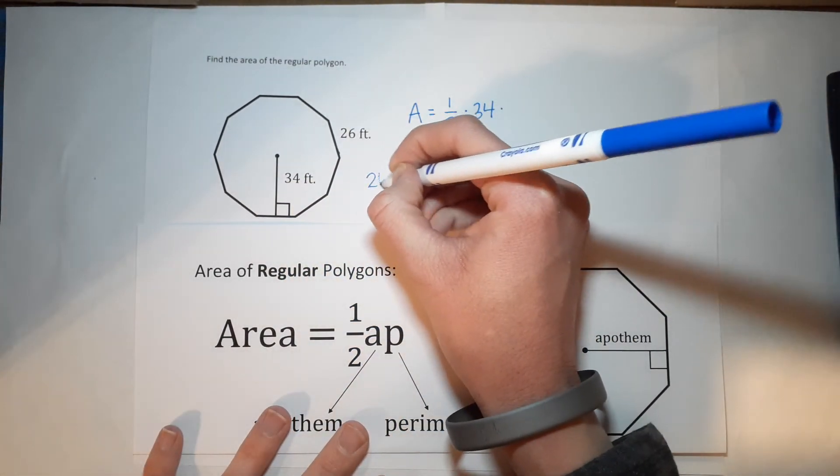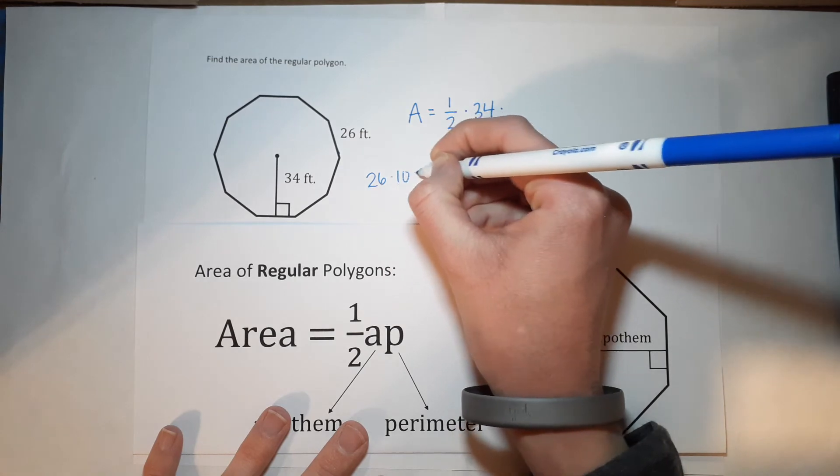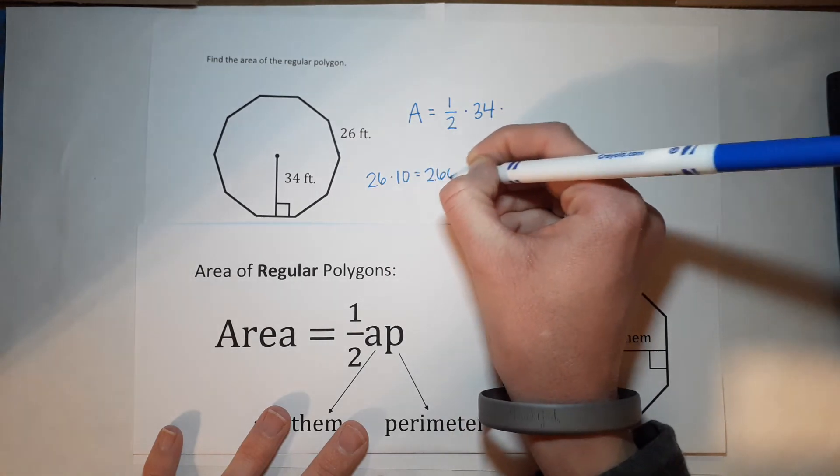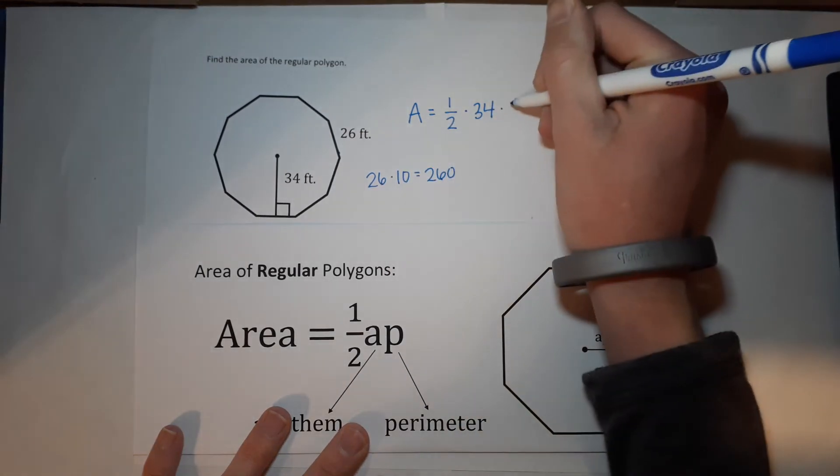Okay, so there are 10 sides. Each side is 26 feet. So that gives me 260. Okay, so my perimeter is 260.